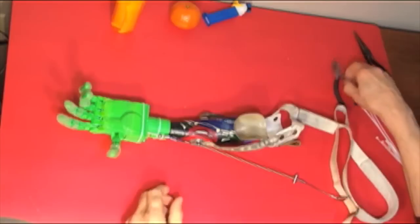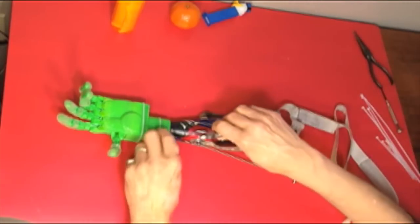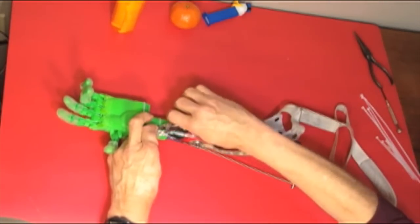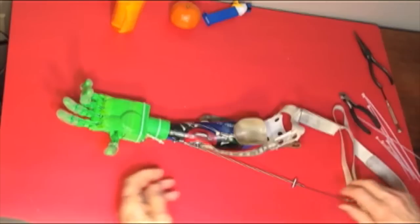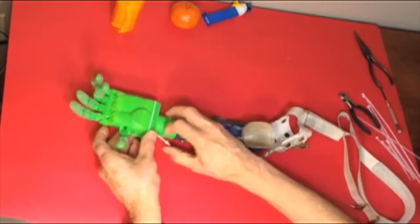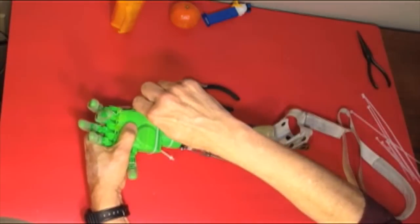Wilhay wears the prosthesis with a harness and he can cause the fingers to grasp by shrugging his shoulders or extending his arm to pull the cable attached to the tendons of the fingers.